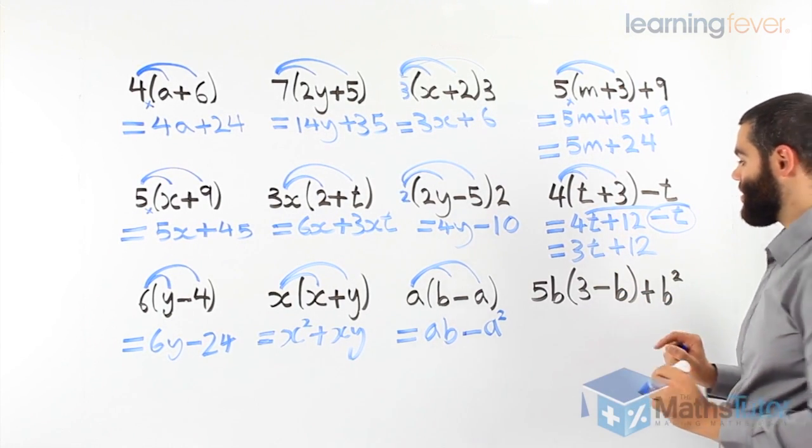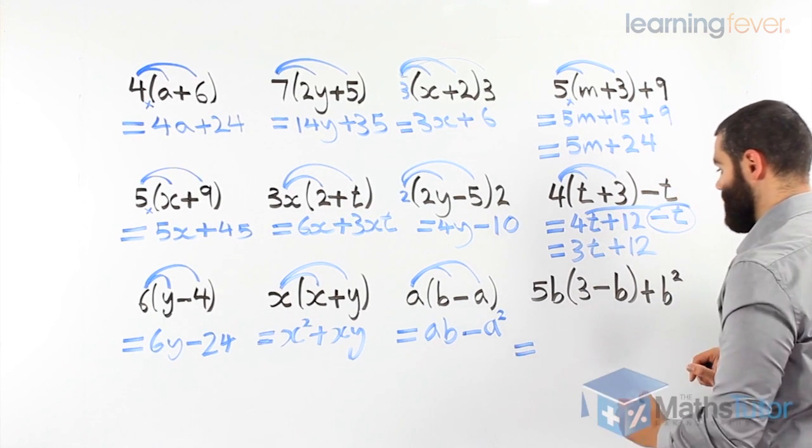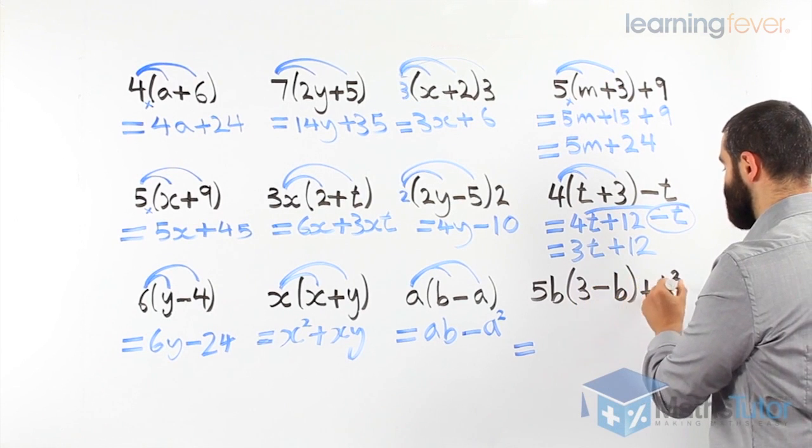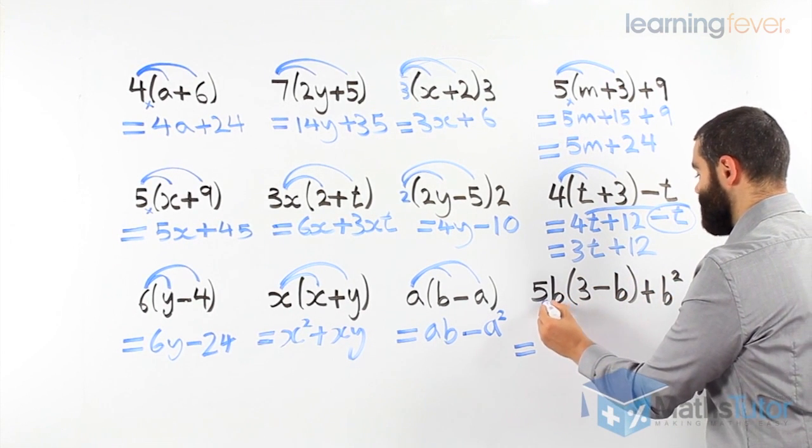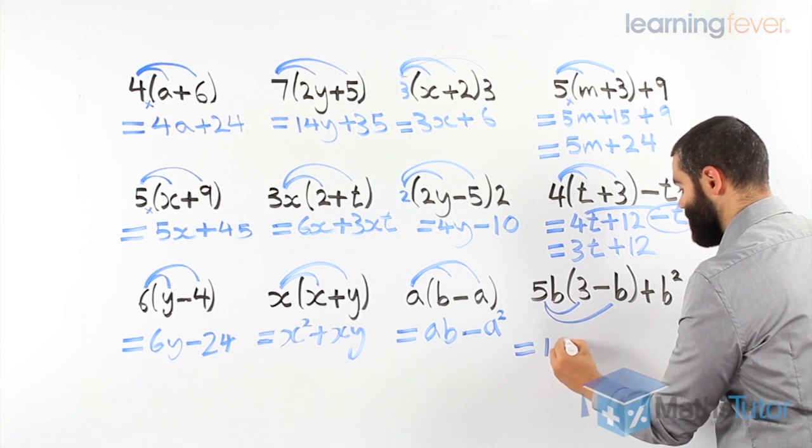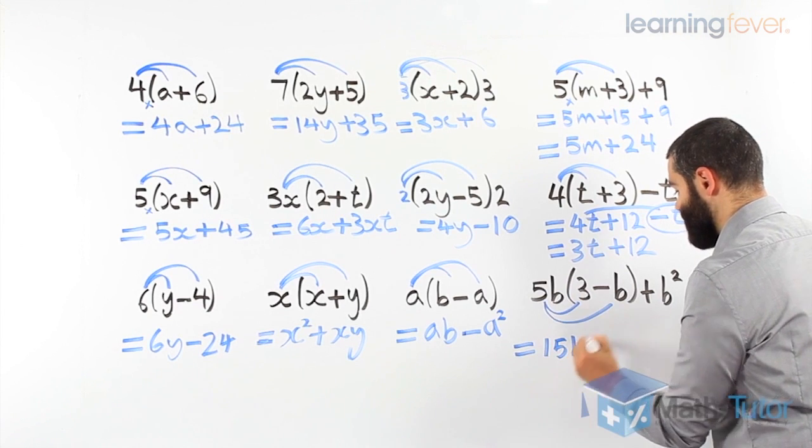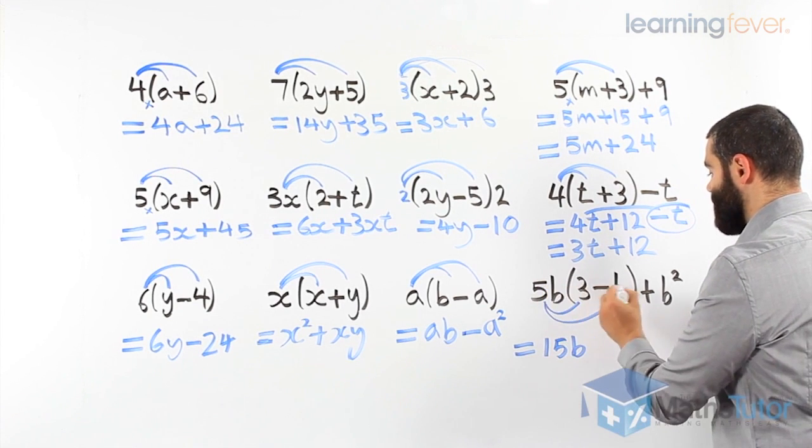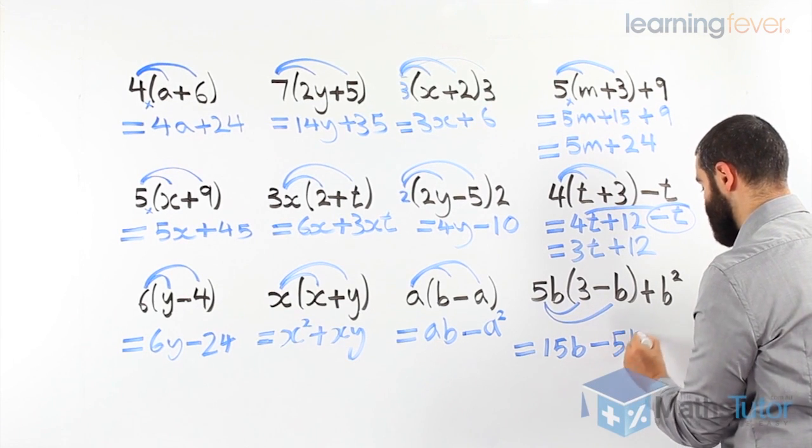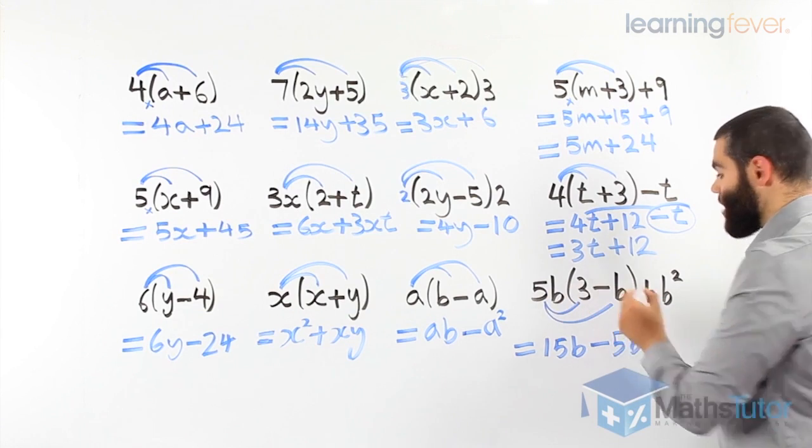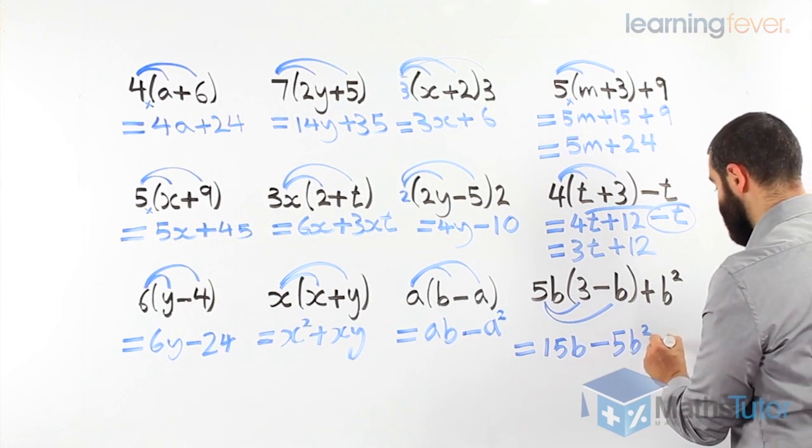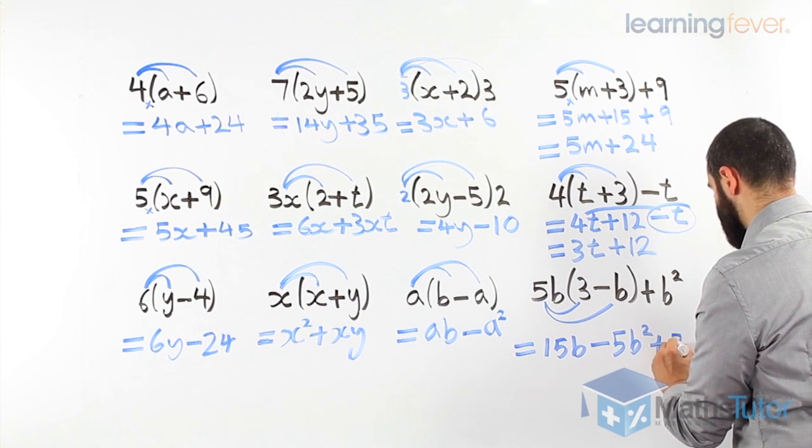And our last example here. 5b, open bracket, 3 minus b, plus b squared. We're going to do our arrows. We'll show our arrows from the bottom. 5b times 3 is 15b. 5 times negative b, minus 5b squared. Very important. 5b times b is 5b squared. And the minus comes down. And then we add our b squared.